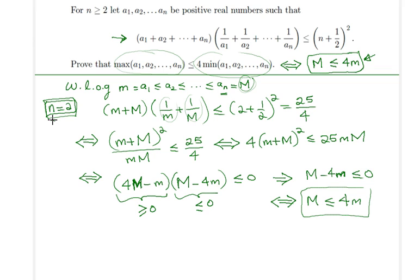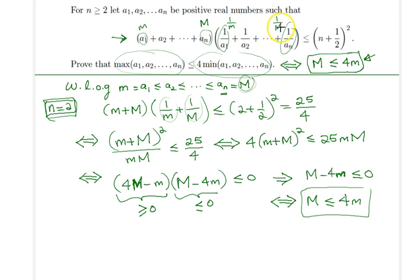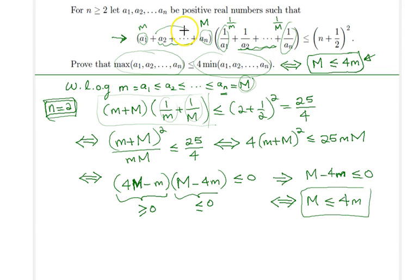Now let's extend this result to the case n > 2. In the general form, little m is a_1, capital M is a_n, 1/little m is 1/a_1, and 1/capital M is 1/a_n. The full expression has intermediate terms in the middle. It would be really useful if we could get rid of those middle sections — and that's where the Cauchy-Schwarz inequality will come in very handy.